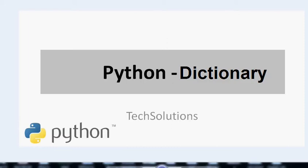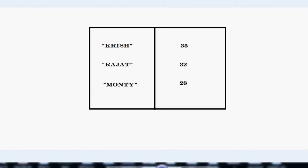You can think of a dictionary in Python as a sort of lookup table. For example, let's say you have a table of information. This table indicates that Krish is 35 years old, Rajat is 32 years old, and Monty is 28 years old. In general, there is a value of 35 with the key 'Krish', and the value associated with the key 'Rajat' is 32. These are called key-value pairs — we have a bunch of keys and the value associated with each of the keys, and you can use a dictionary to store this kind of information.